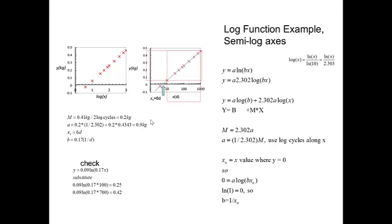So here's how we can try it out. Let's use this example. The slope is 0.41, which is that distance right there, divided by 2 log cycles. So like we've done before, we're ignoring these numbers and just taking that to be 1 log cycle, 2 log cycles. We get the slope equal to this value, and then a is 0.2 divided by 2.3, or 0.2 times 0.4343, and we get 0.09 kilograms for the term a.